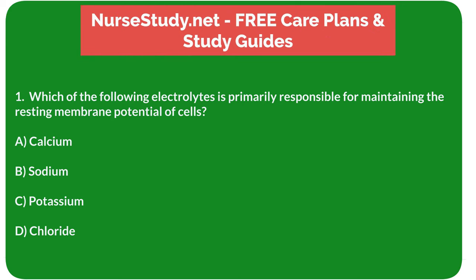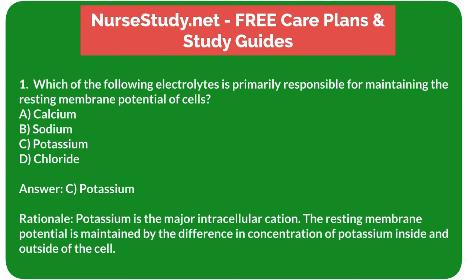Question 1: Which of the following electrolytes is primarily responsible for maintaining the resting membrane potential of cells? A. Calcium. B. Sodium. C. Potassium. D. Chloride. Answer: C. Potassium. Rationale: Potassium is the major intracellular cation. The resting membrane potential is maintained by the difference in concentration of potassium inside and outside of the cell.